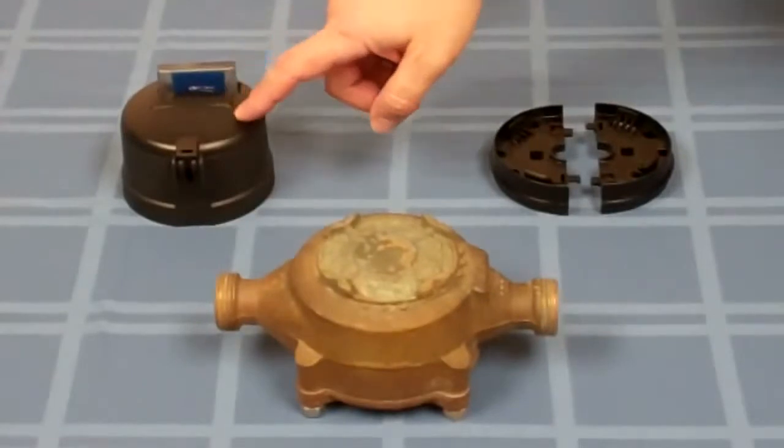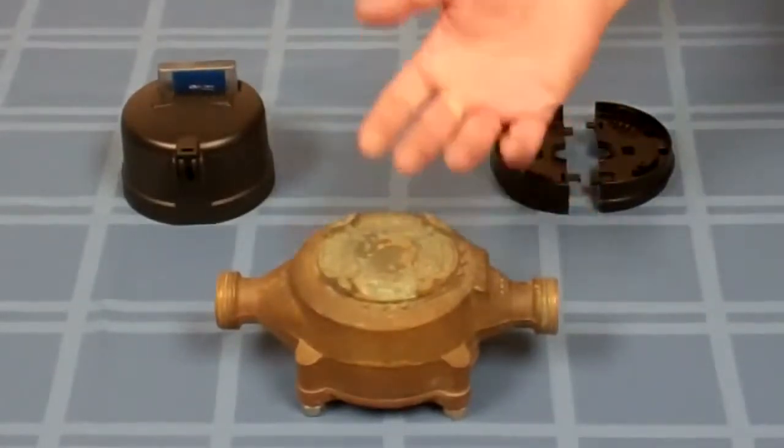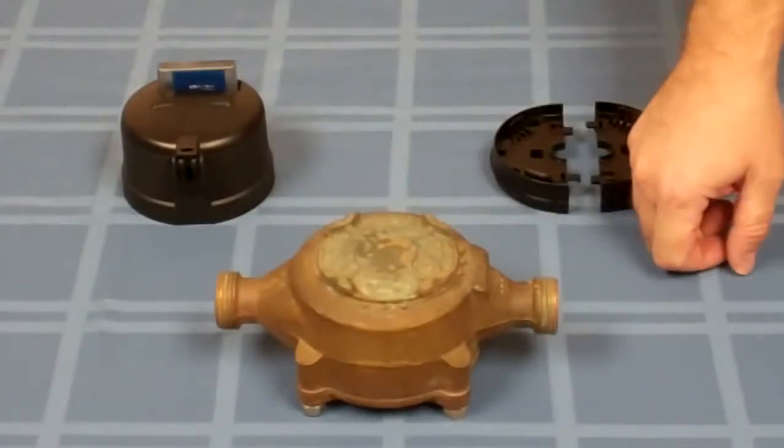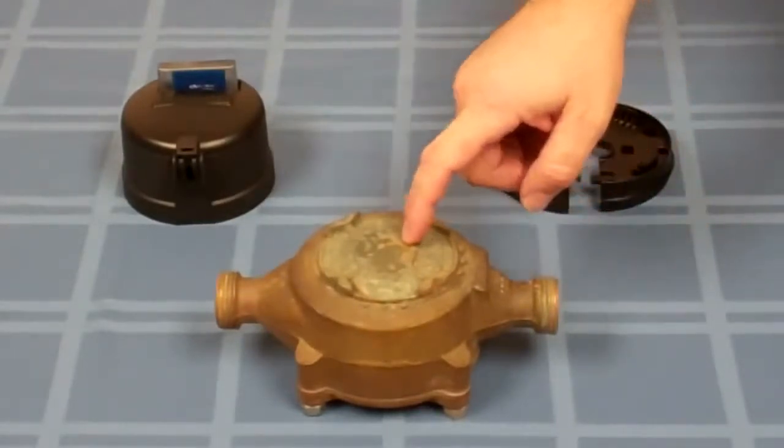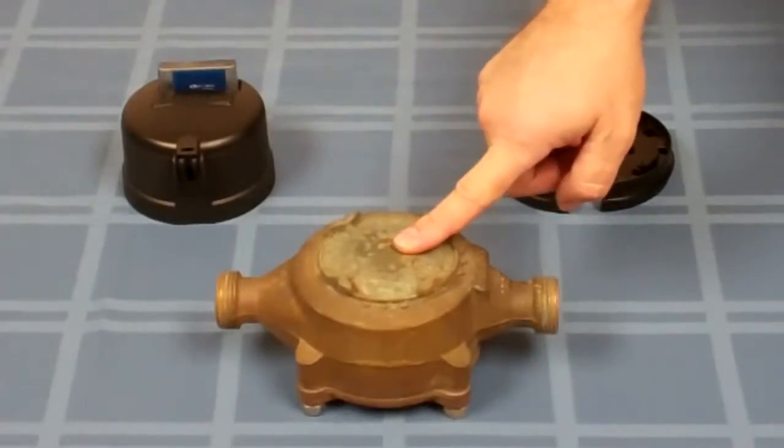The beauty of the Innovate register is that when it's installed on one of these older meters, it's going to automatically improve your low flow registration. In many cases, it will restore your low flow up to original specs or even beyond what the meter was new.